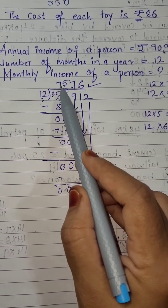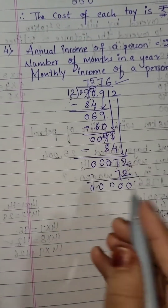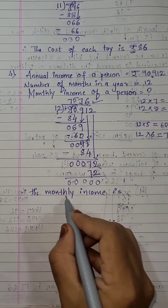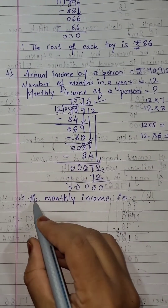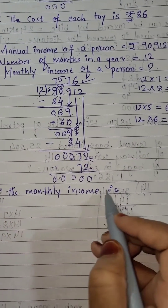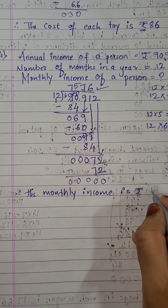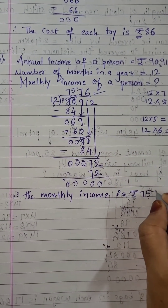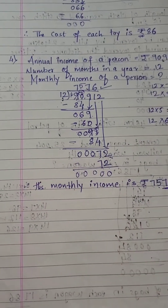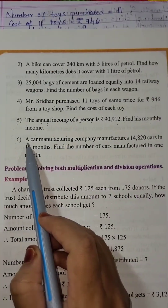Therefore, his monthly income — or a person's monthly income — is rupees 7,576. That is your answer. Now let's move to the next and last one.